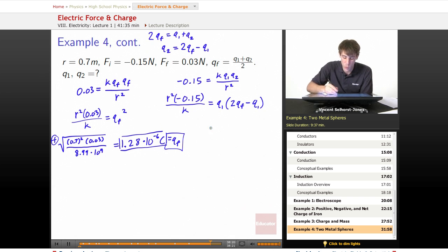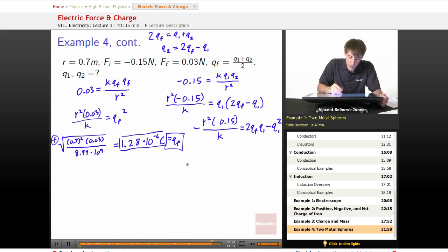We multiply that Q1 over. We get R squared, negative 0.15. Let's move that negative out front. Negative over K equals two QF Q1 minus Q1 squared. So at this point, we'll move everything over to one side because what we've got now is we've got a quadratic equation. We're going to have to use either the quadratic formula or some sort of calculator that has an impressive amount of algebraic solving in it.